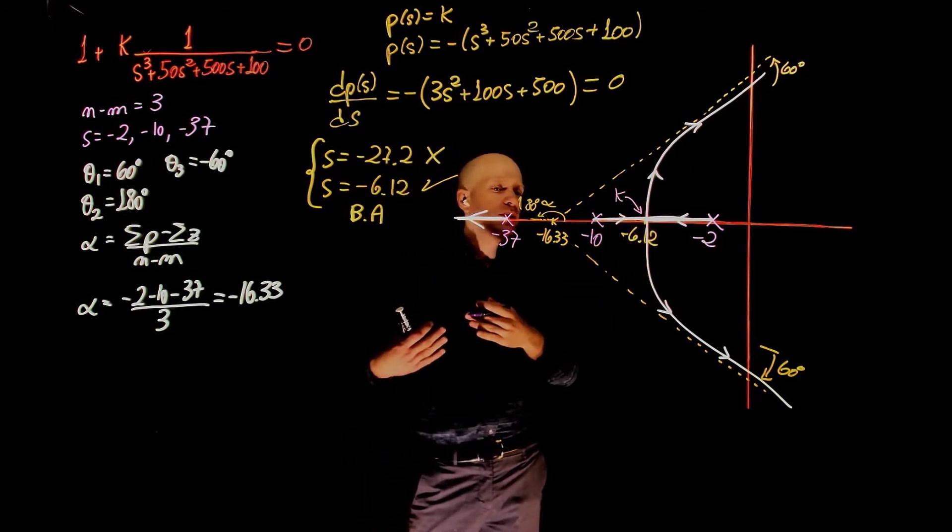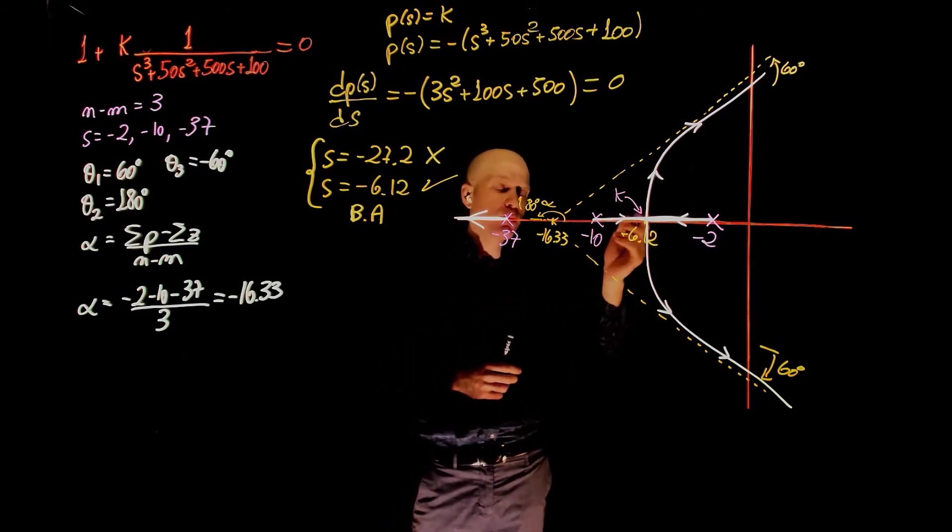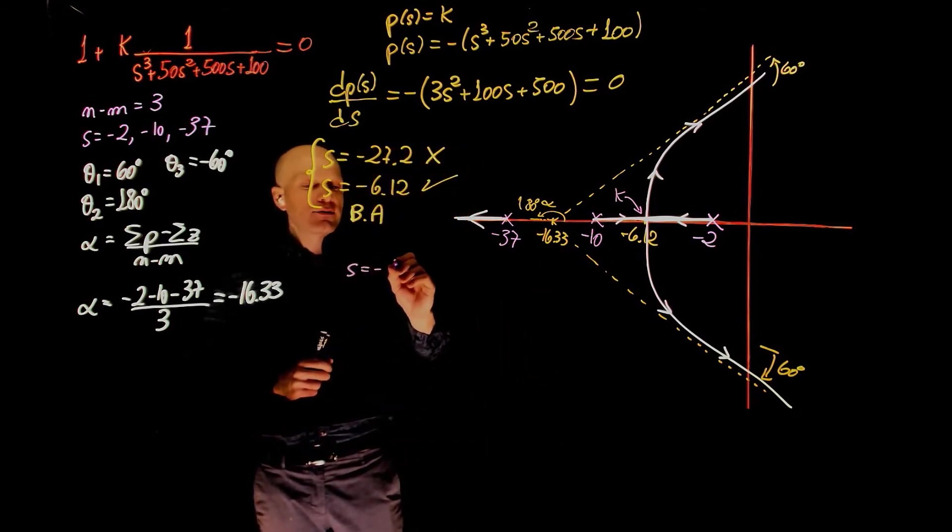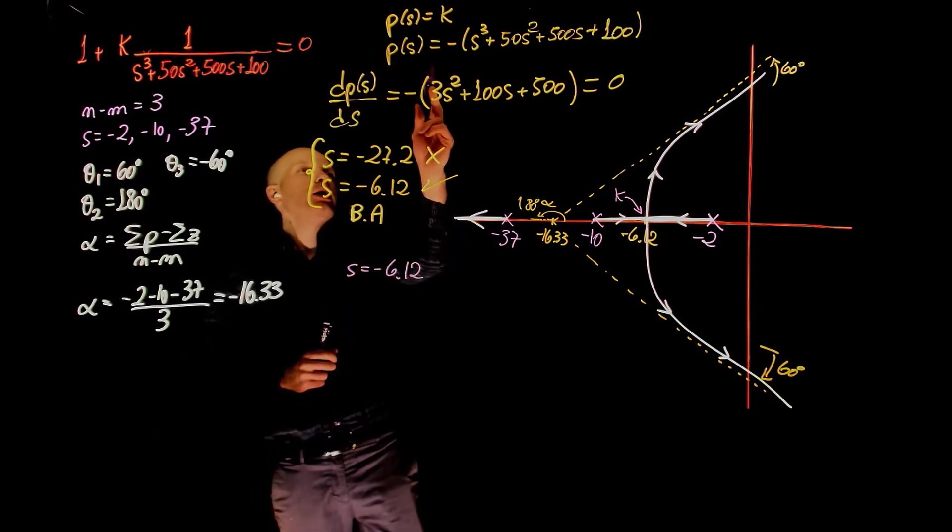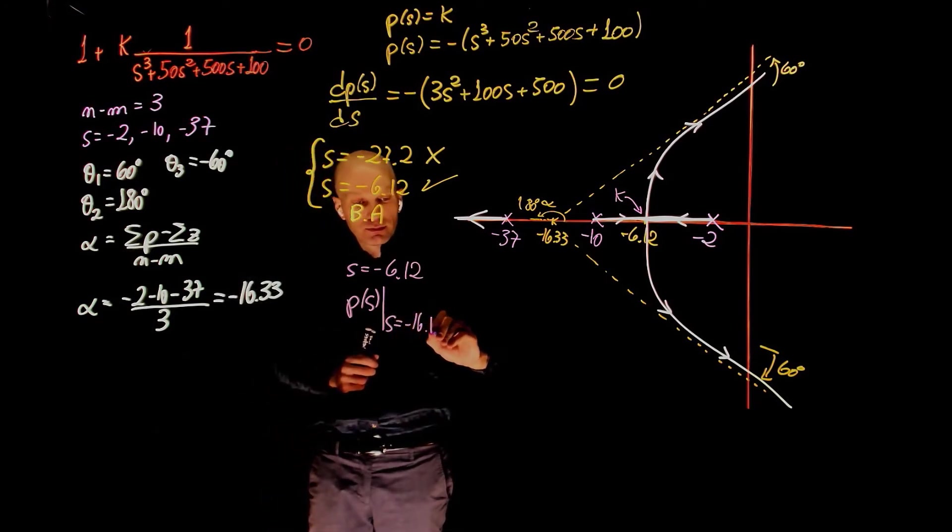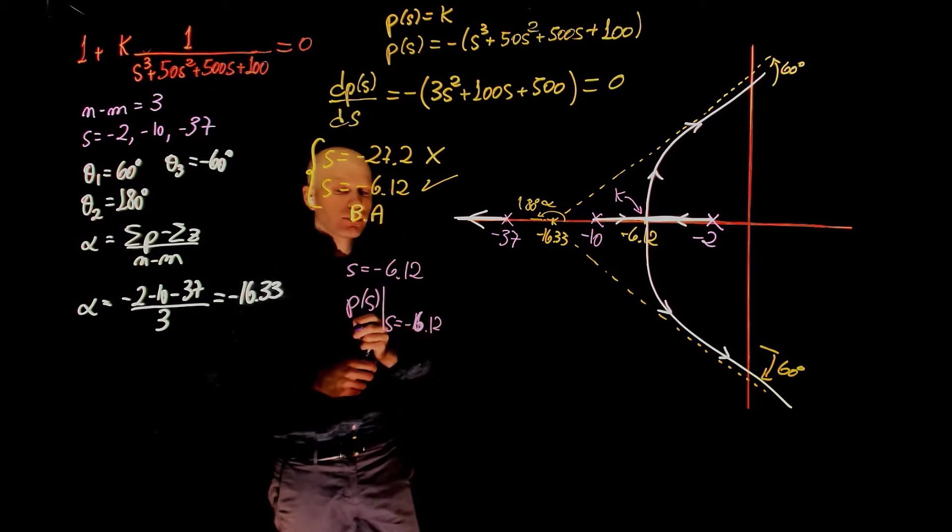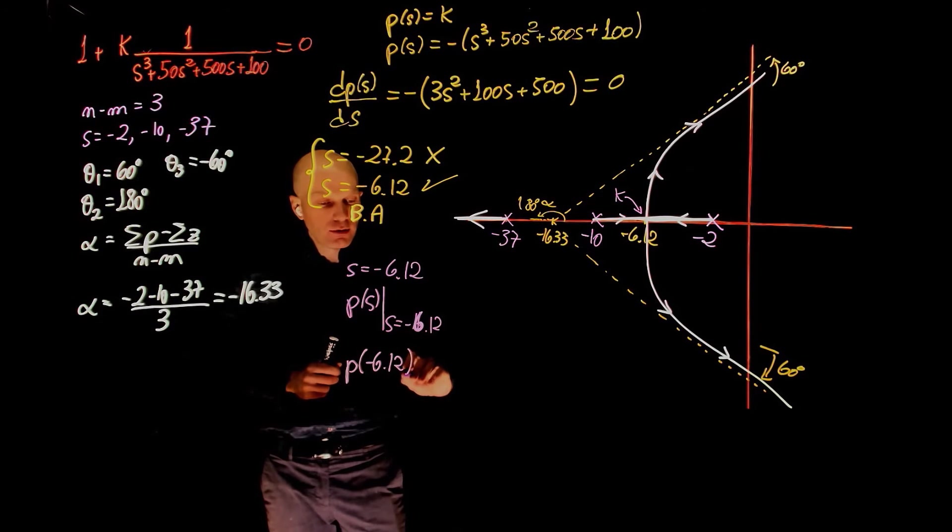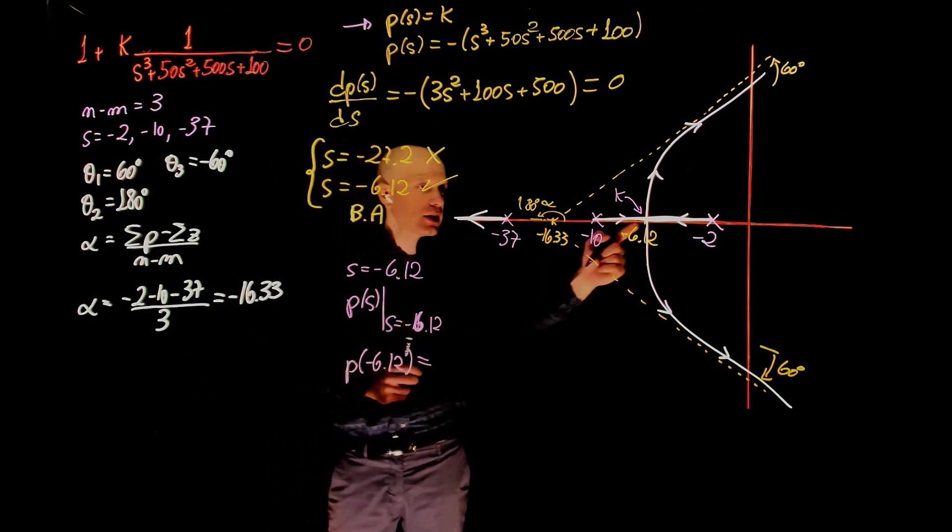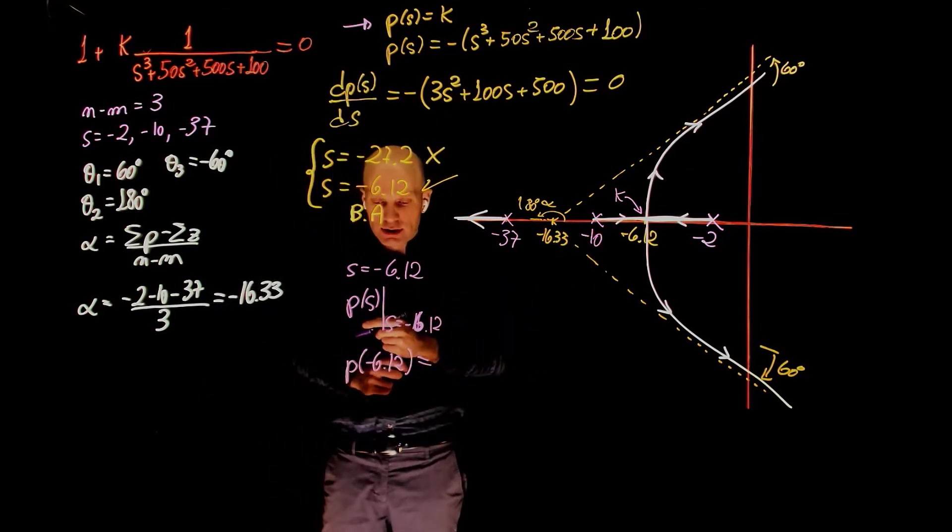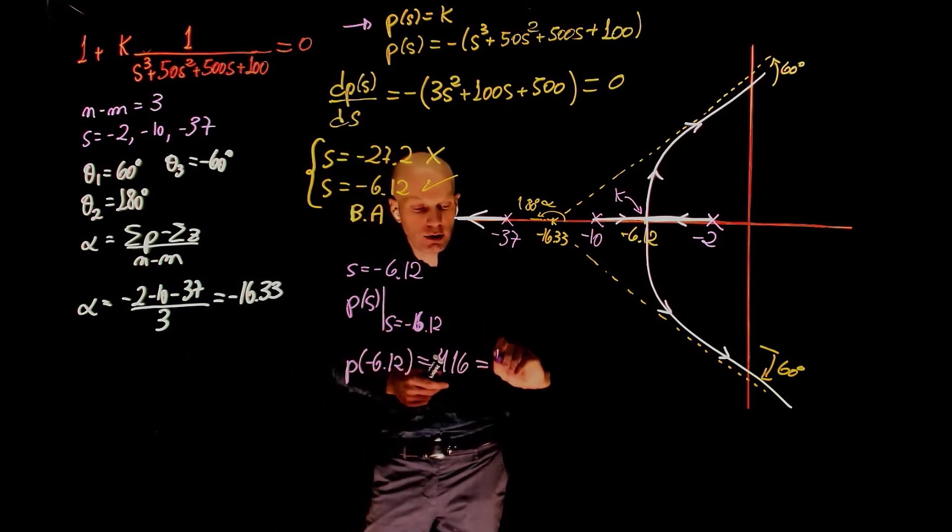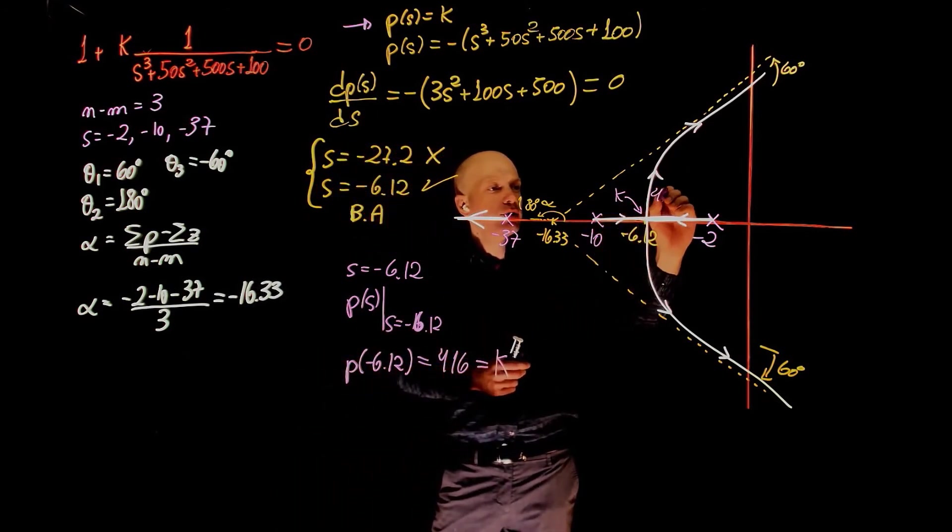So the value of k at this point may be critical to some application. What is the value of k there? We know that the breakaway point is at negative 6.12. If we now evaluate our function P of s at s equals to negative 6.12, which is P of negative 6.12, this gives the value of P, which according to our definition here is the value of k at that specific point, at that specific value of s. And this happens to be 416, which again is the value of k. So k here is 416.